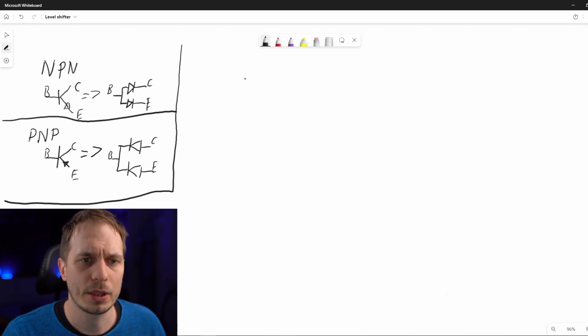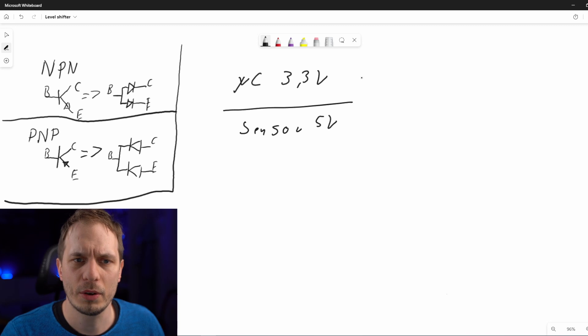Often you have the case where you have a microcontroller powered with 3.3 volts and some kind of sensor powered by 5 volts. Now you want to send a high logic level and this has to be understood by both, and the logic level for low also.